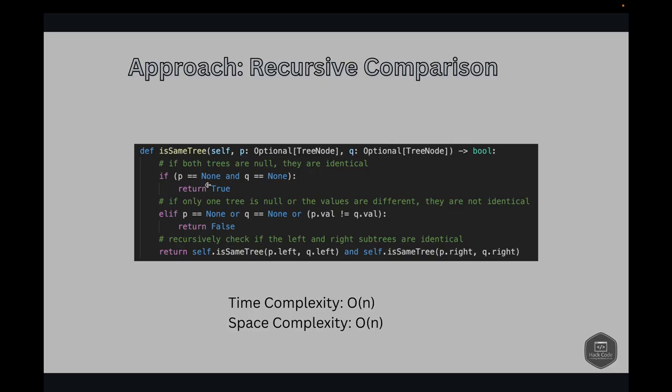Let's look into the code here. We start by checking if both trees are null. If they are null, it means they are identical, so we return true. The next condition is: if only one tree is null or the values are different, then they are not identical, so we return false. That's what we're doing here - checking if only one of them is null or the values are not the same.